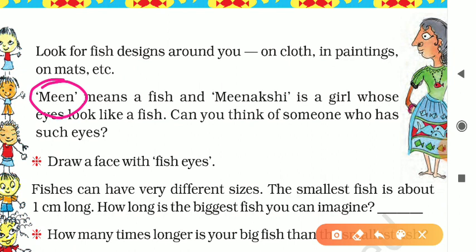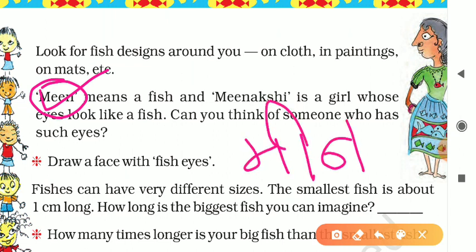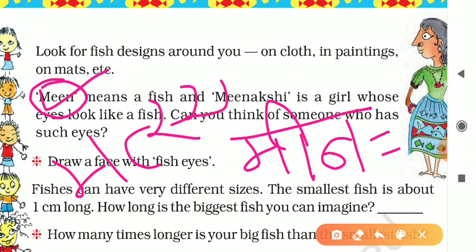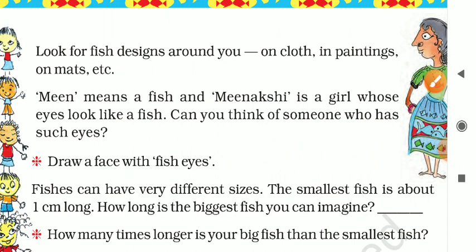Remember this word: 'meen' means a fish. It is actually a Hindi word — we write it as 'meen.' Meen means fish. And 'Meenakshi' is a girl whose eyes look like a fish. Can you think of someone who has such eyes in your class or neighborhood?